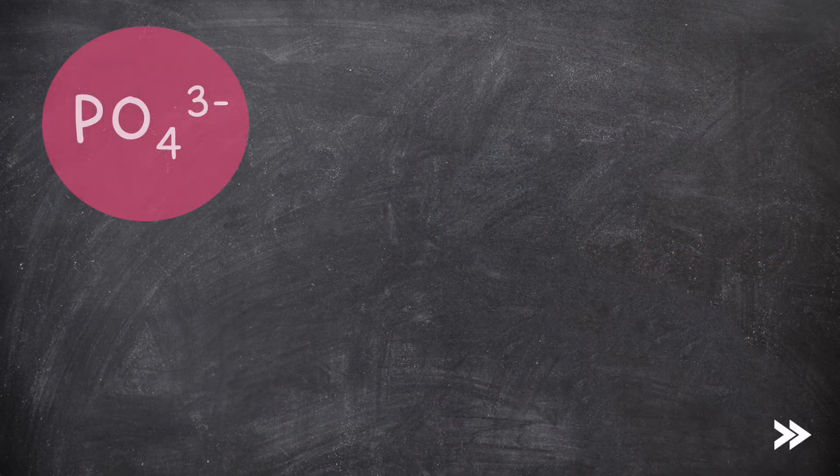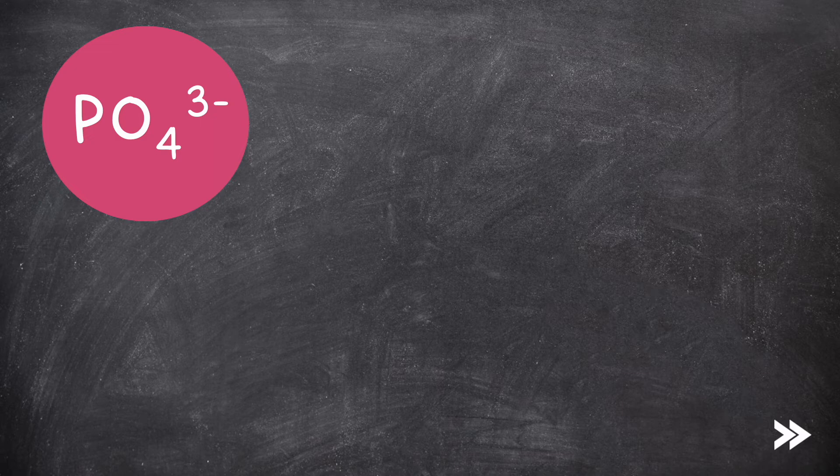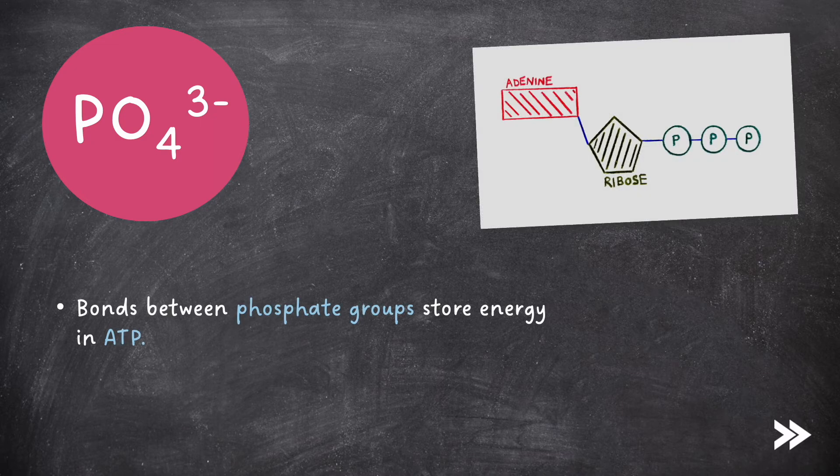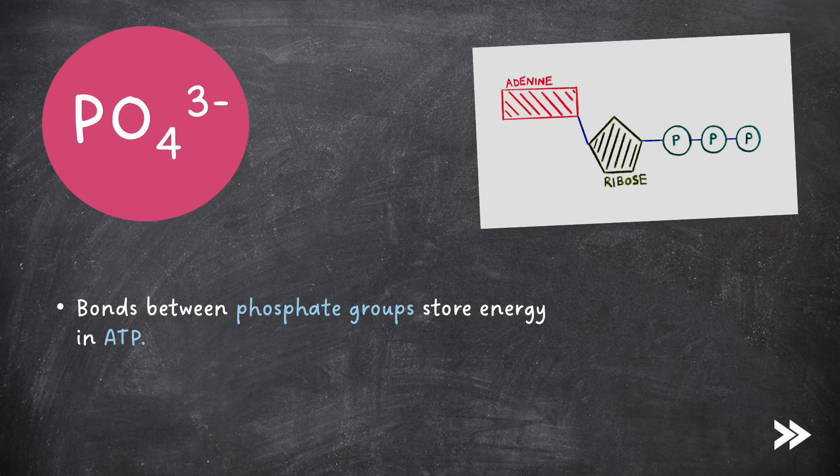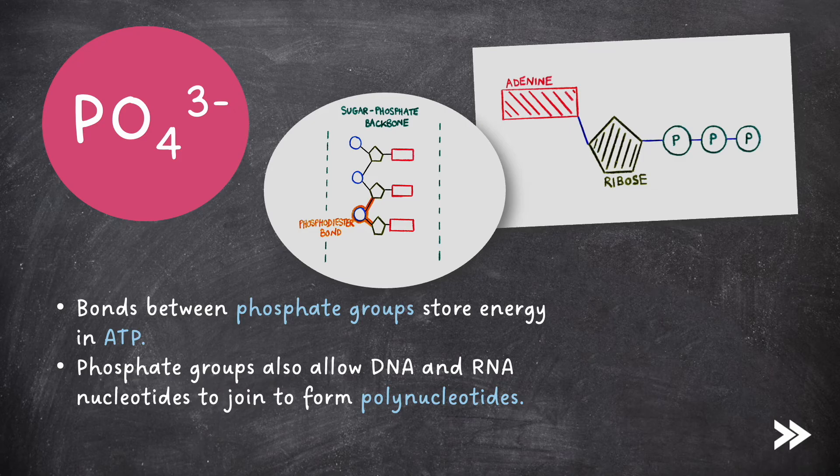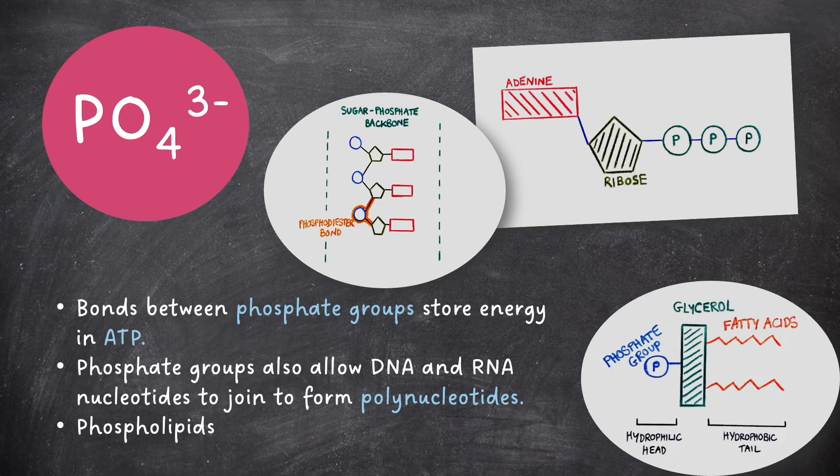Finally, we have phosphate ions. There are many uses for phosphate ions. For example, the bonds between phosphate groups store energy in ATP. Phosphate groups also allow DNA and RNA nucleotides to join to form polynucleotides. Phosphate ions are needed for the hydrophilic phosphate head of phospholipids.